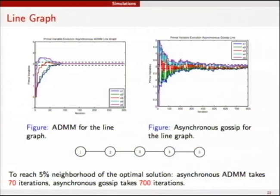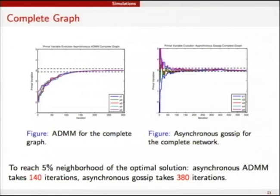So, then, we wonder what happens to complete graph. So, again, the five node graph, we run the ADMM and gossip. So, here, to reach 5% neighborhood precision, ADMM took 140 iterations, whereas asynchronous gossip took 380 iterations. So, the difference becomes very different, depends on the graph topology. That's something we're studying right now, to understand how network topology affects the performance of the algorithms.